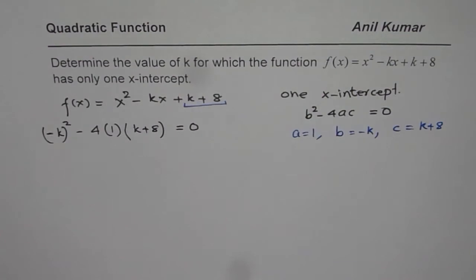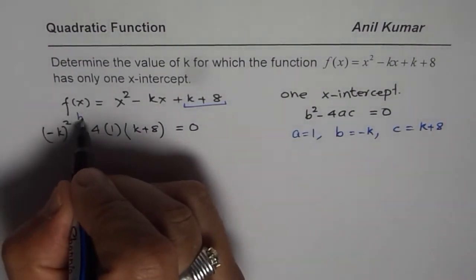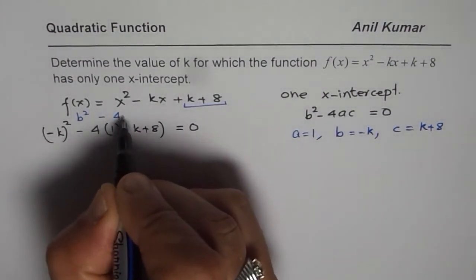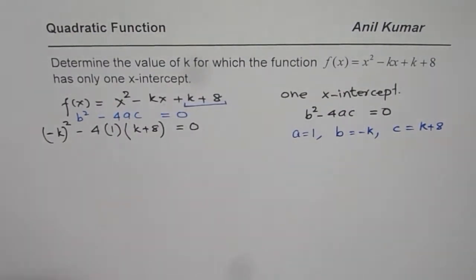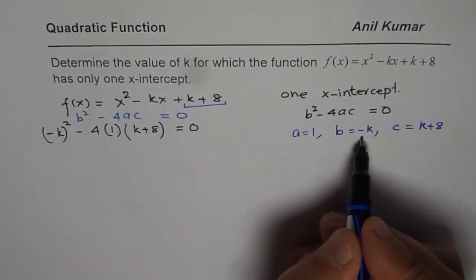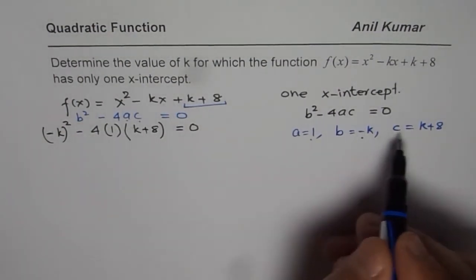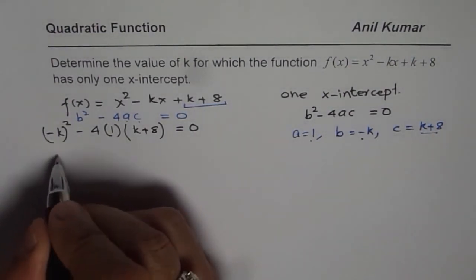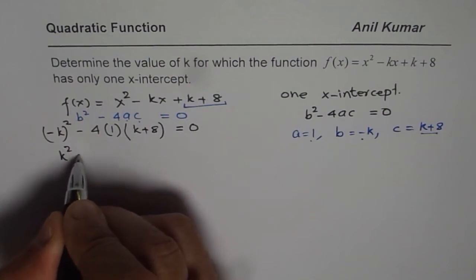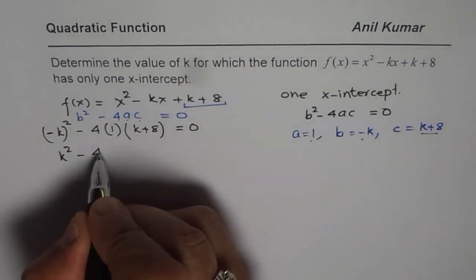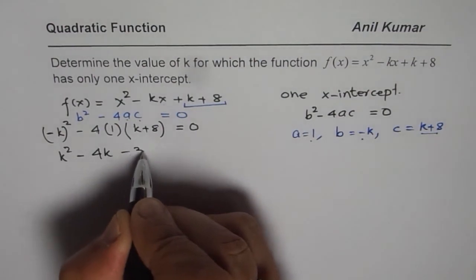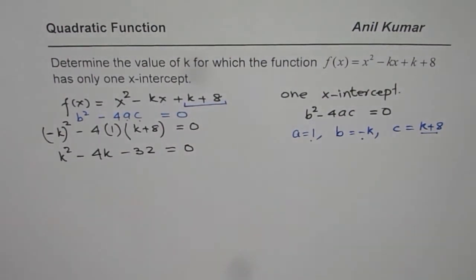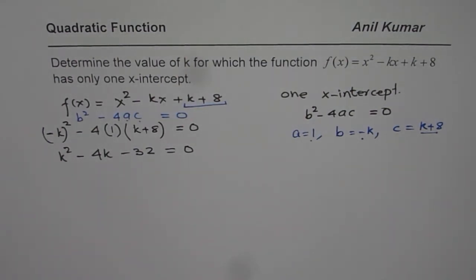So what we did at this stage is check for b² - 4ac = 0, where b = -k, a = 1, and c = k + 8. Expanding: (-k)² = k², minus 4 times k, minus 32 equals 0. So we get a quadratic equation in k.